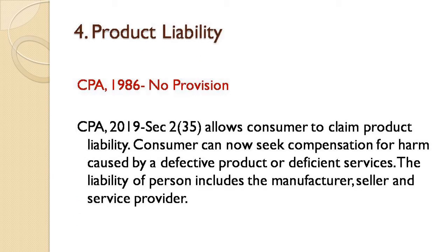The fourth important change is product liability, which was not there in the 1986 Act. In 2019, it was introduced. The consumer now has the right to know from whom they can claim compensation — whether from the manufacturer, seller, or service provider. Previously, if someone bought goods from an online platform like Myntra or Amazon and found a defect, those platforms would say 'we are just a platform where sellers come and sell their products — we are not the manufacturer, so we are not liable.' Consumers were told to file suit against the manufacturer instead, causing unnecessary harassment.